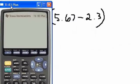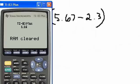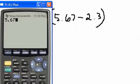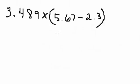Let's see, we have 5.67 minus 2.3. So 3.37 is the answer when you subtract 5.67 minus 2.3.